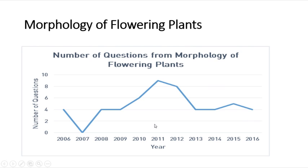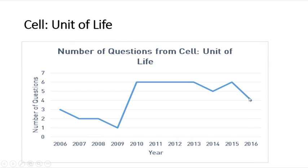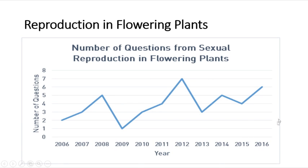For Morphology of Flowering Plants, 4 questions were asked in the last year and nearly 9 in 2011. Animal Kingdom had nearly 3 questions last year, 7 questions in 2006, and 6 in 2011. Cell: Unit of Life had nearly 4 questions last year, staying around 6 questions from 2010 to 2013. Human Reproduction had 4 questions last year and 12 in 2010. Sexual Reproduction in Flowering Plants had around 6 questions in 2016, with a maximum of 7 in 2012.